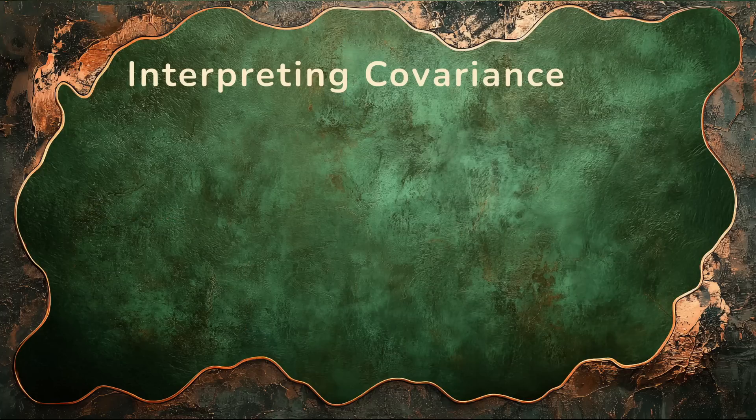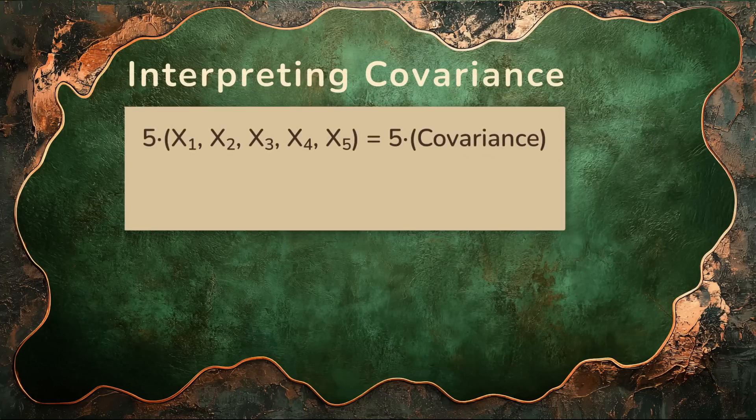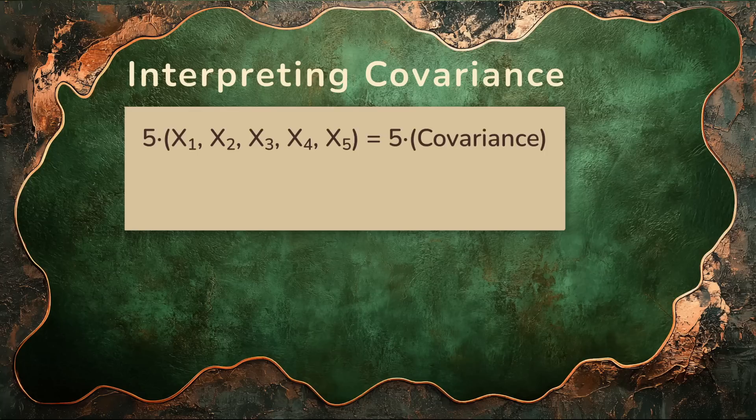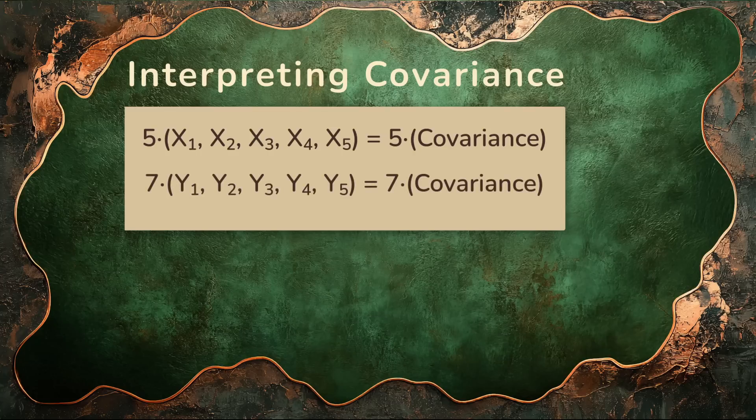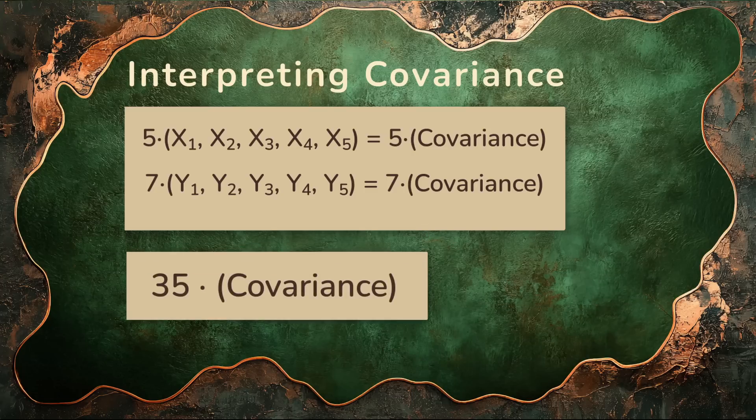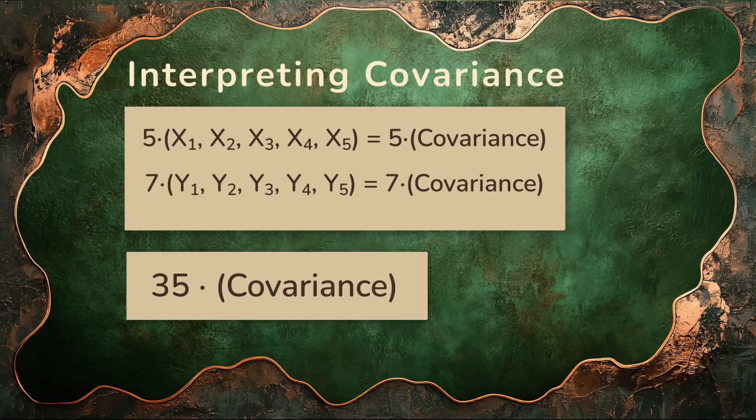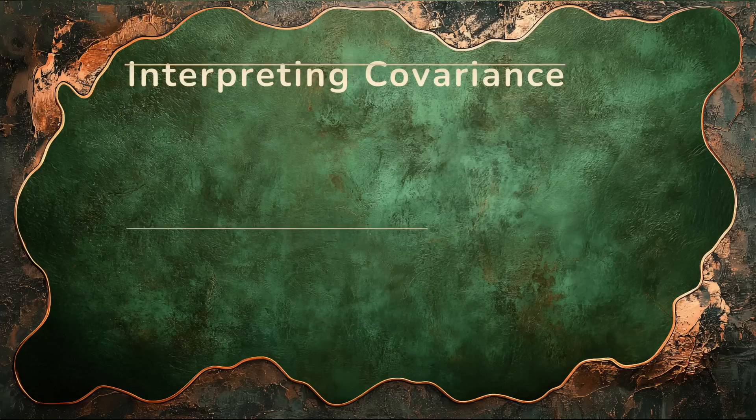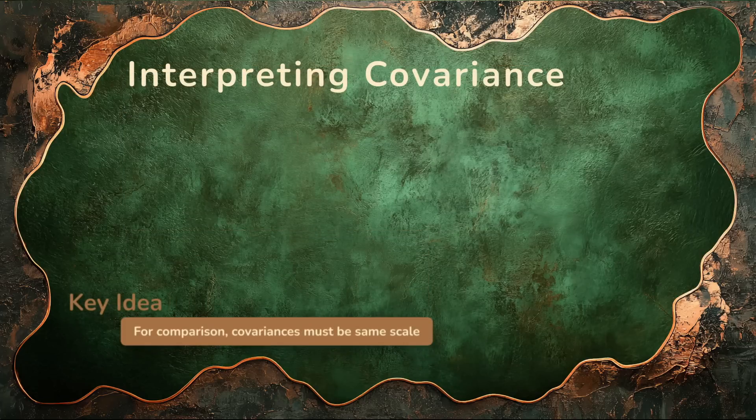Because covariance is sensitive to scale. Multiply every x value by 5 and the covariance grows by a factor of 5. Multiply every y value by 7 and the covariance grows by a factor of 7. Scale both together, and now the covariance isn't just a bit bigger, it's 35 times bigger. That means you can't compare covariances across data sets unless the variables are on the same scale.